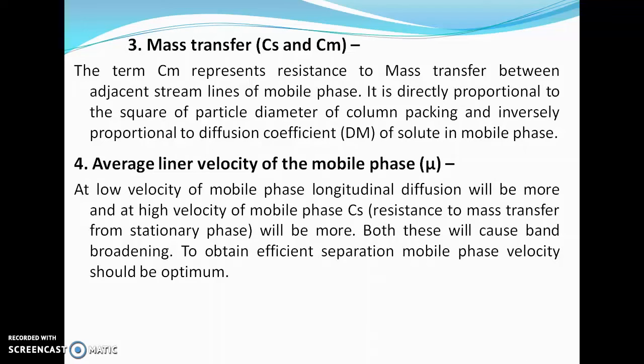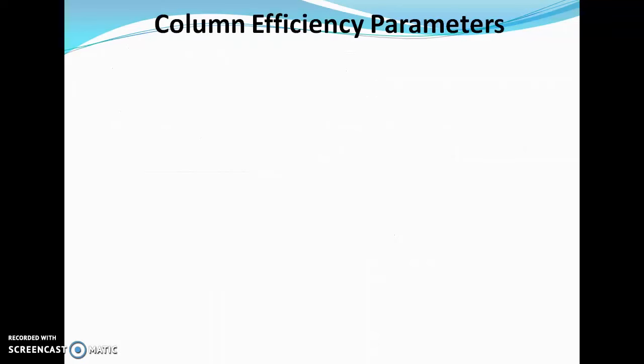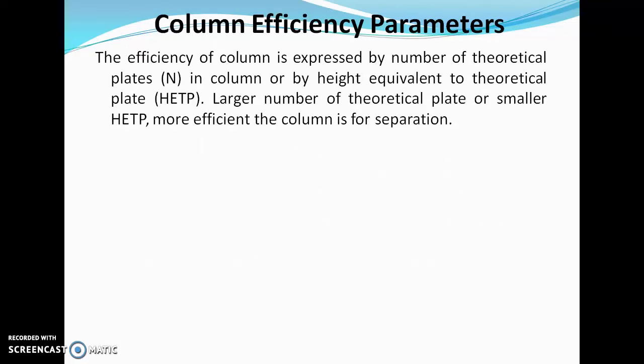To obtain efficient separation, mobile phase velocity should be optimum. Small and uniform particle size of stationary phase, uniform column packing, and optimum velocity of mobile phase will give a large number of theoretical plates or smaller HETP, resulting in good separation. This concludes rate theory and the Van Deemter equation.